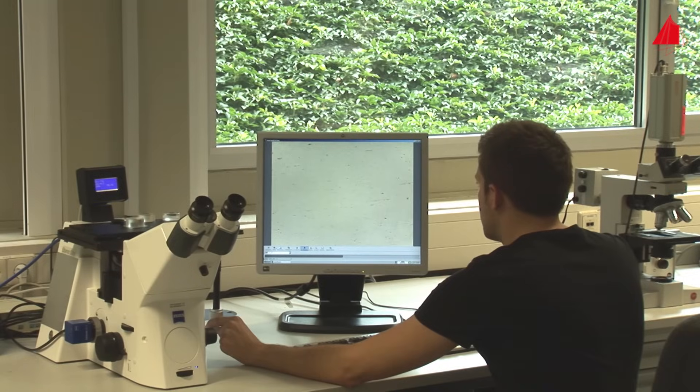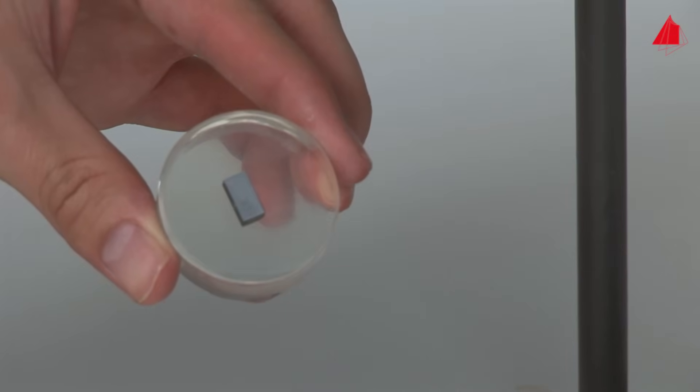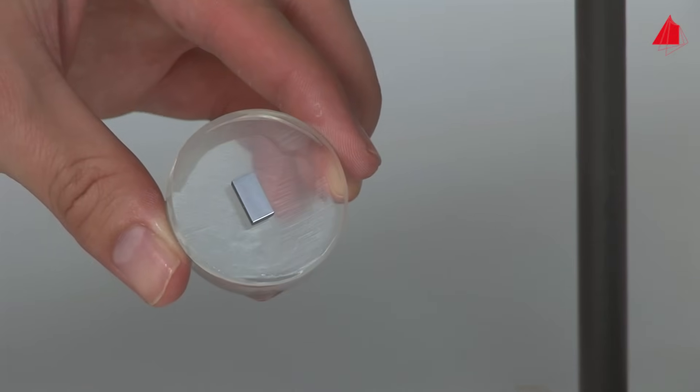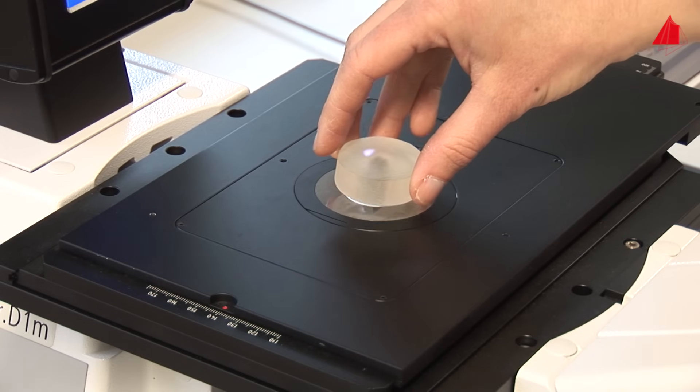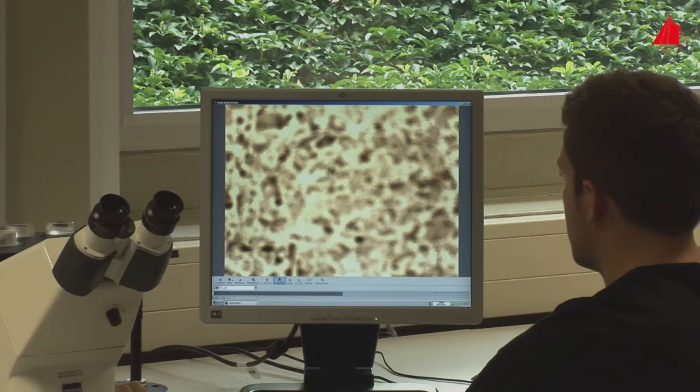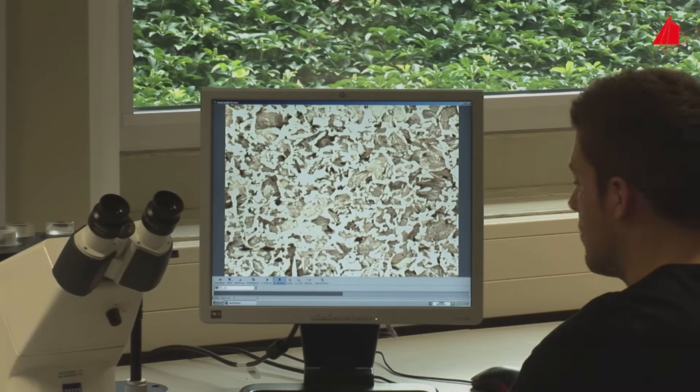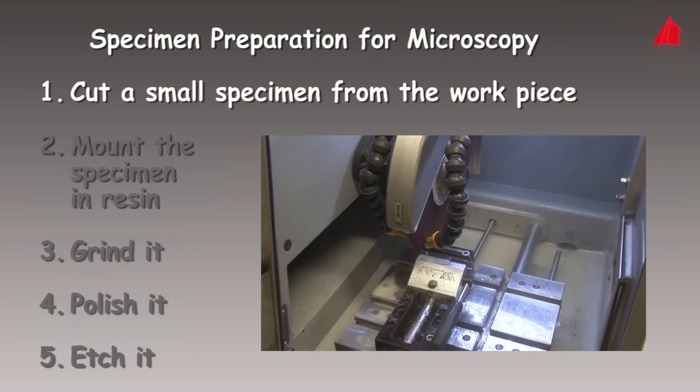In this video, we would like to introduce the microscopic techniques of metallography. Microscopic means to investigate a workpiece at higher magnification, usually with a light microscope. To have a look at the inside, the material has to be prepared properly and this is how it is done.